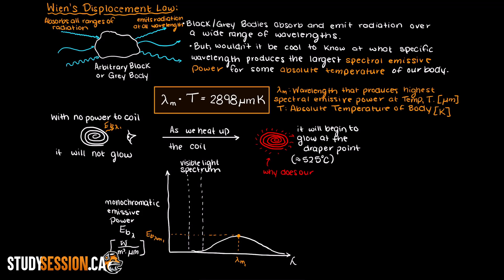But how does Wien's displacement law explain why our metal coil is now suddenly visible in the dark? Well to answer that let's look back at the law. We stated that as the temperature of our body increases, then the wavelength that offers the maximum flux of radiation is going to get shorter.